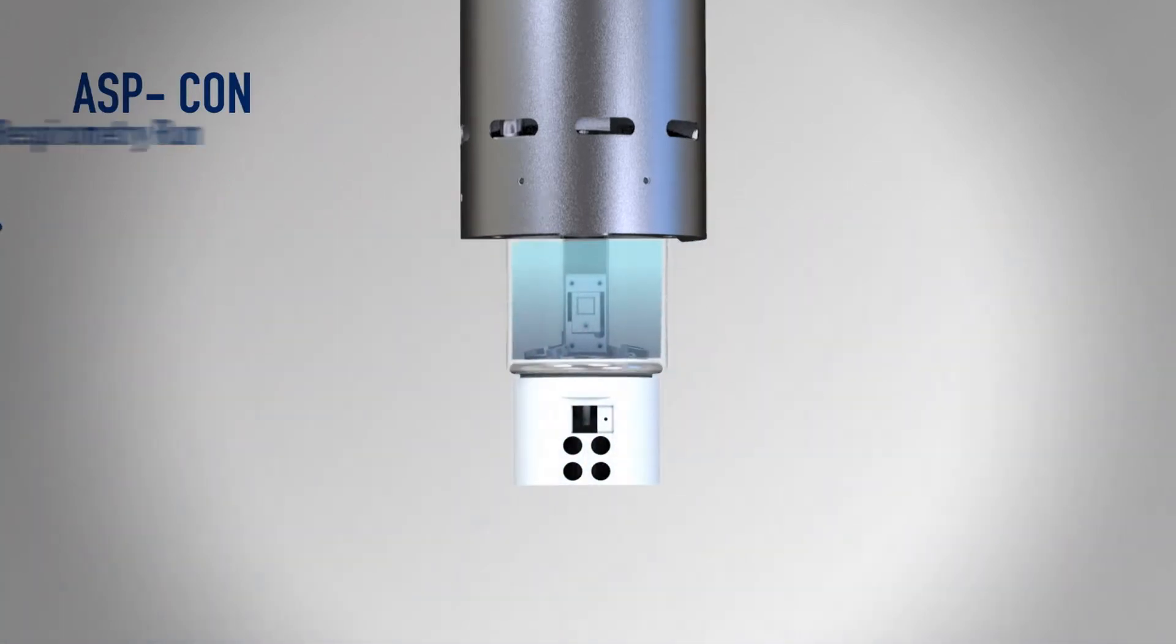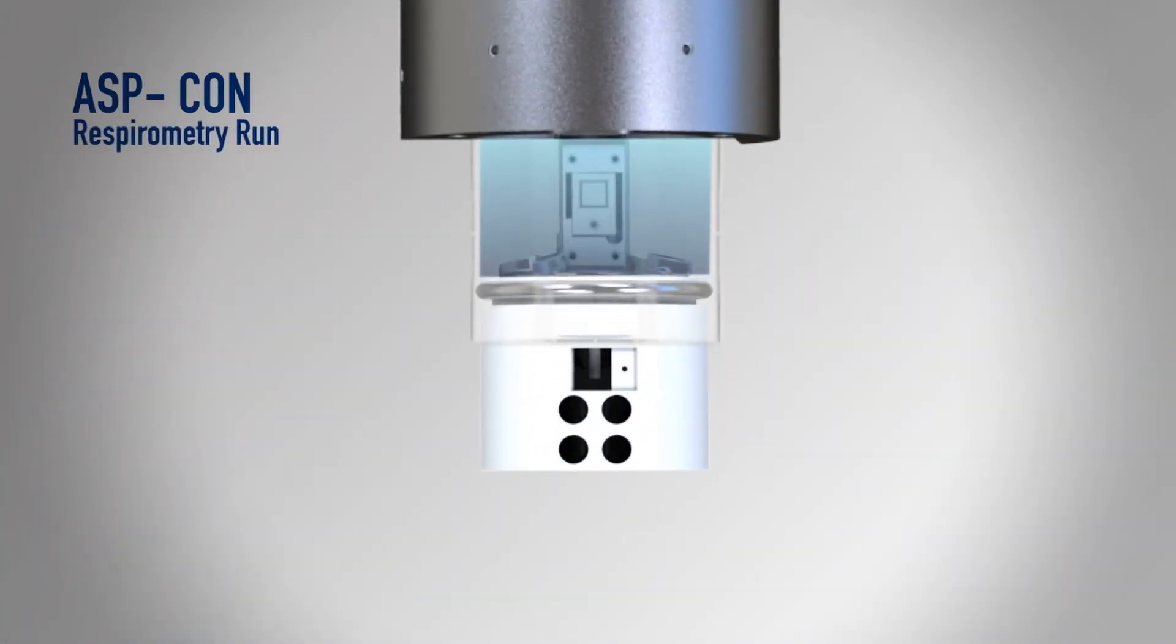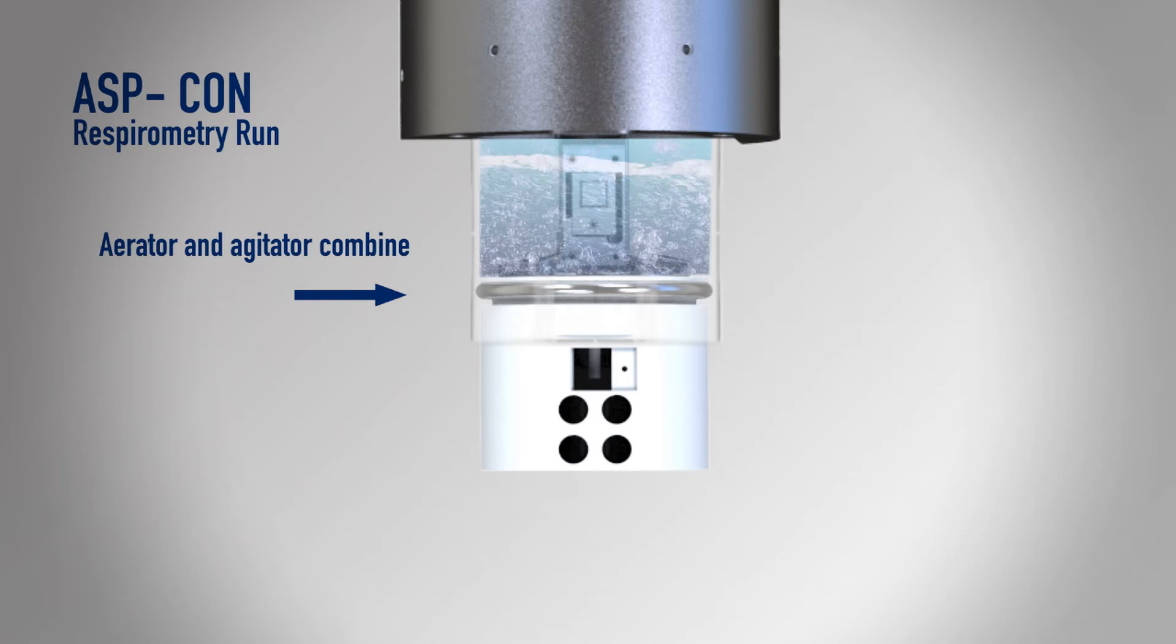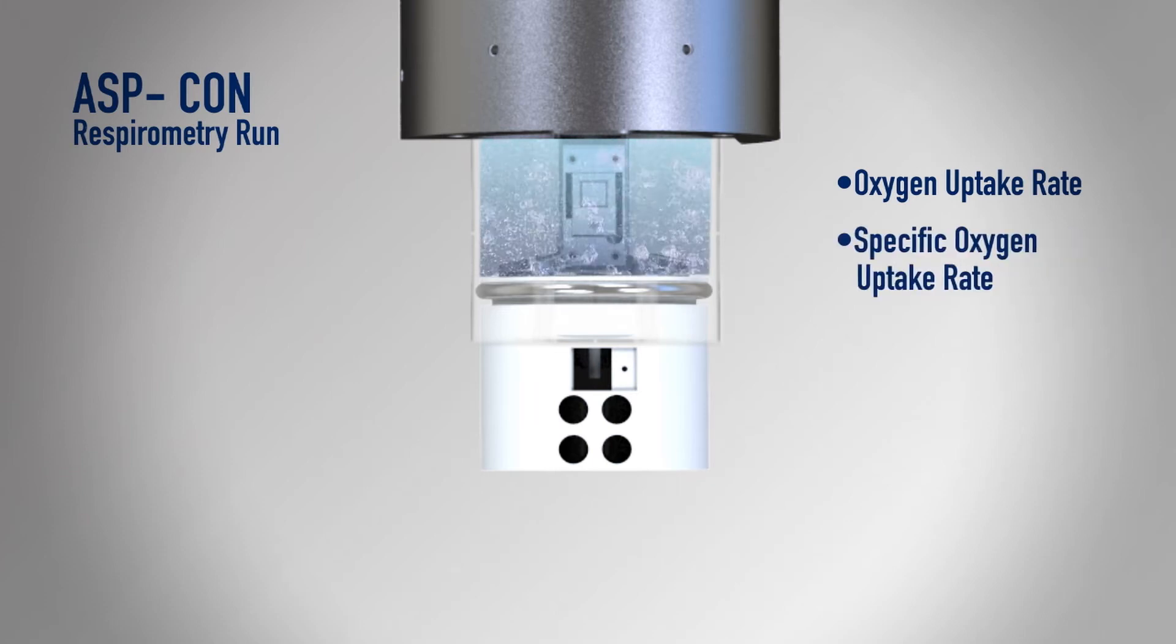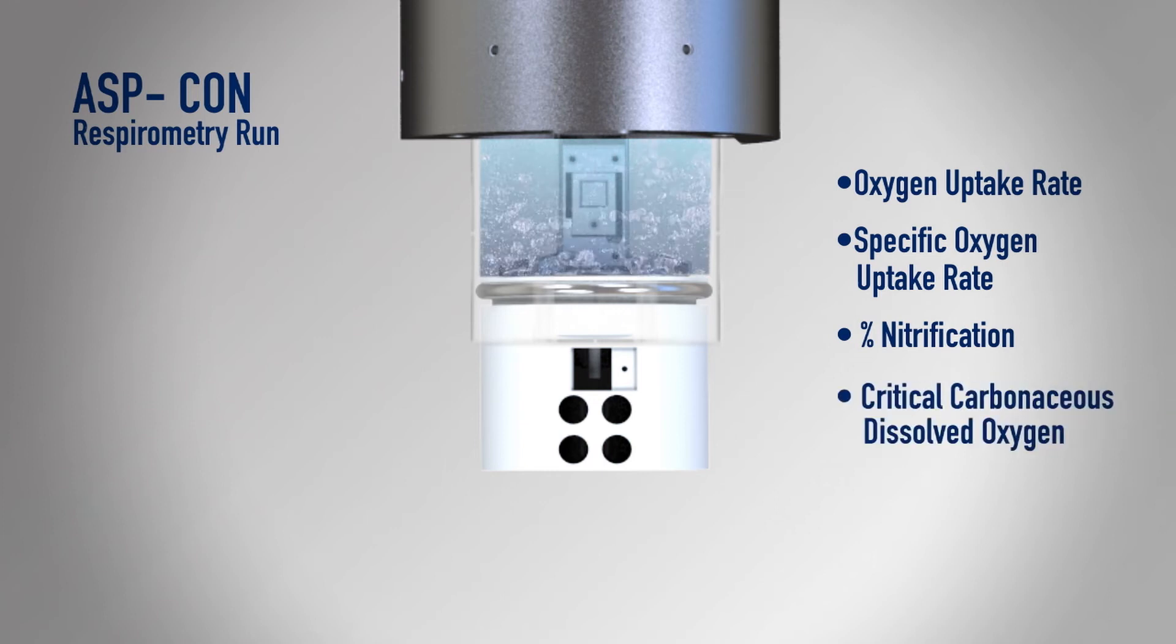The core then raises to cover the ingestion holes before the aerator and agitator combine to raise the dissolved oxygen level in the sample to allow for an effective respirometry run, including oxygen uptake rate, specific oxygen uptake rate, percentage for nitrification, critical carbonaceous dissolved oxygen and critical nitrification dissolved oxygen.